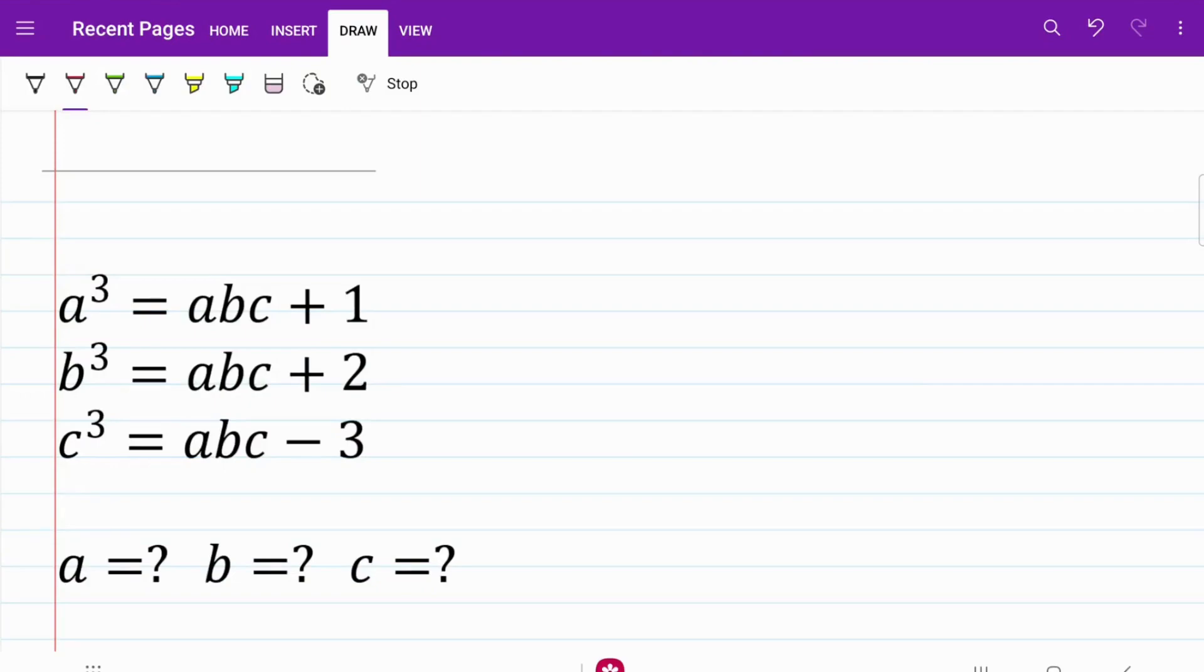To me, the layout of this question is a little misleading where one is tempted to try to solve it by using a cube minus one is equal to b cube minus two is equal to c cube plus three. I don't know where this would lead us, but there's a better way to deal with this.